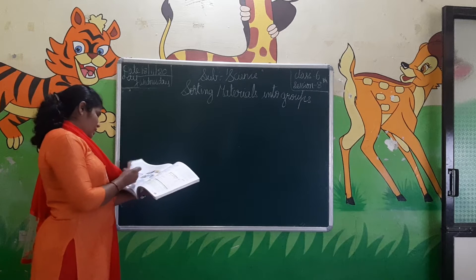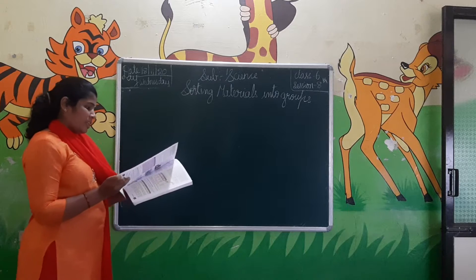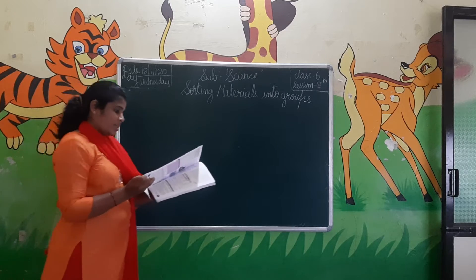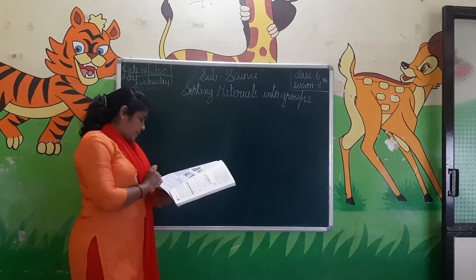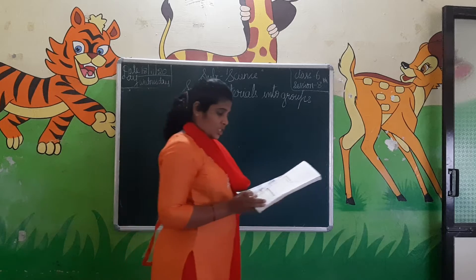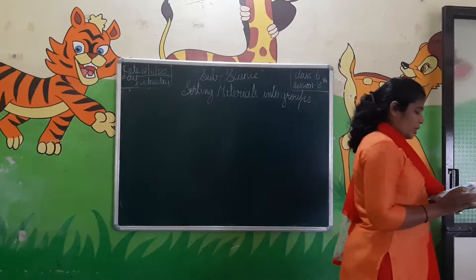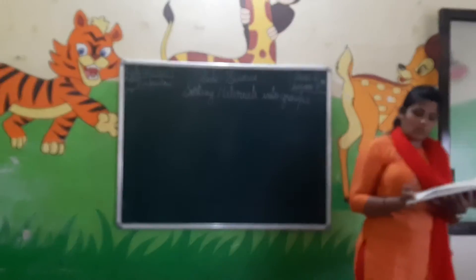The properties we have learnt are: appearance, texture, hardness, and soluble or insoluble. In soluble or insoluble, we covered solubility of solids in water, solubility of liquids in water, and solubility of gases in water. Up to here we have completed.